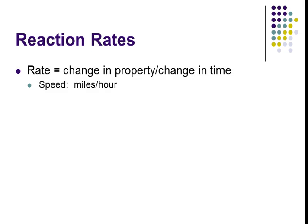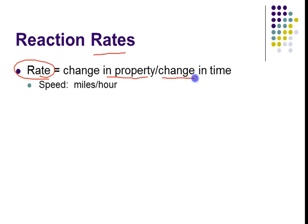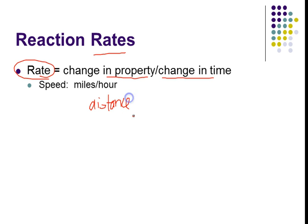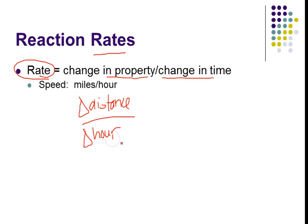When we talk about reaction rates, we really mean how fast is a reaction going. A rate — you probably learned in physical science — is a change in a property over a change in time. Something measurable changes. So it might be distance in an hour. That would be a rate. A change in distance over a change in time — that's what we're really trying to do.